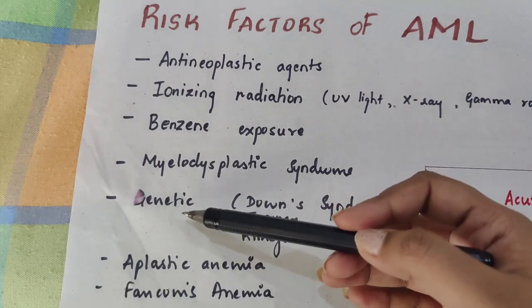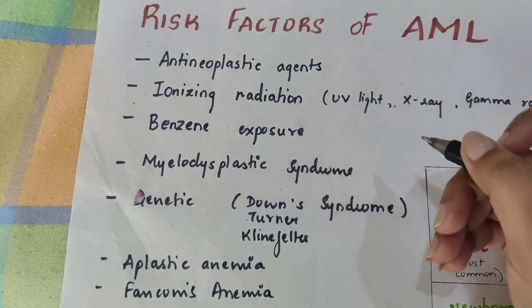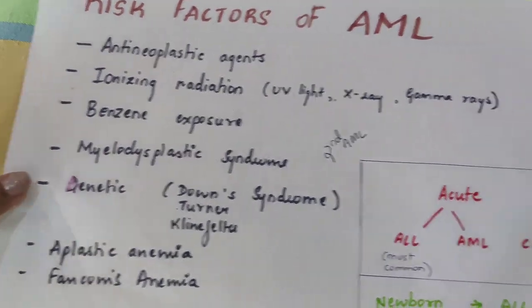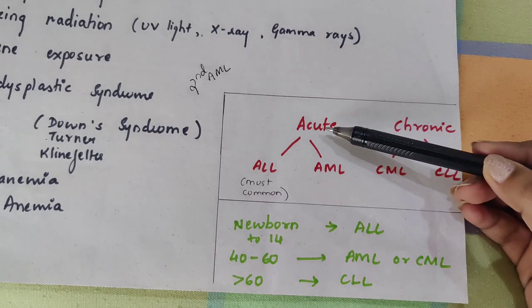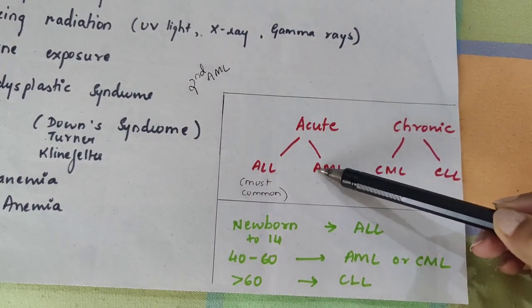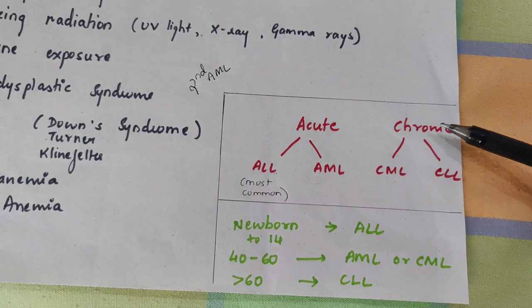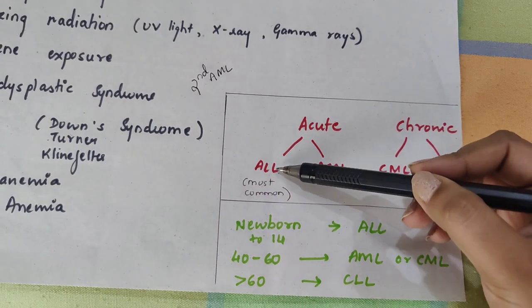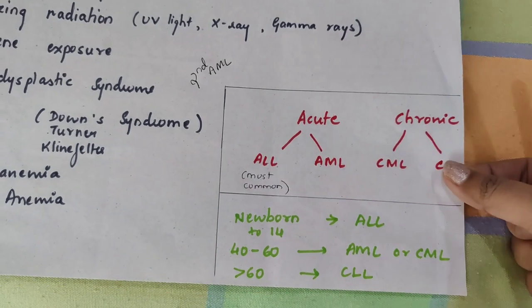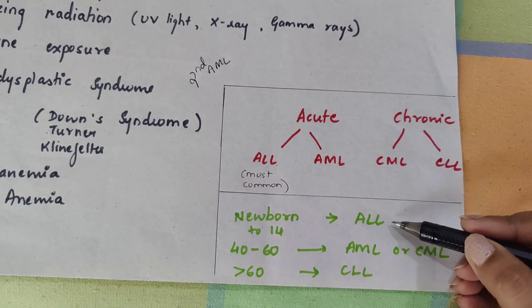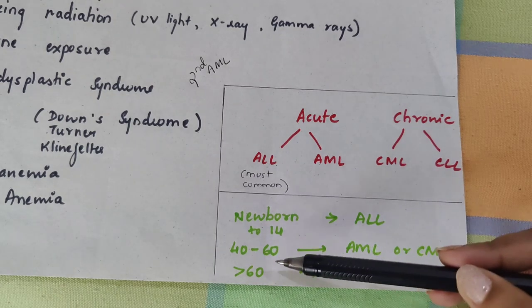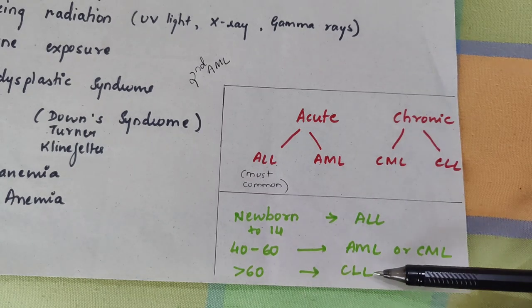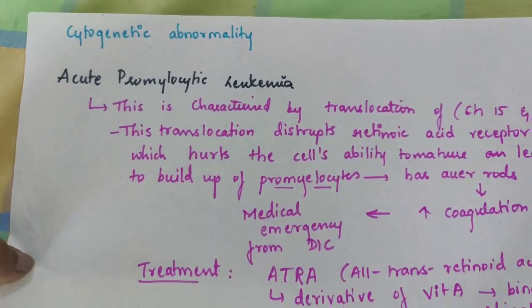When AML is caused by genetic factors or myelodysplastic syndrome, it is called secondary AML. In terms of leukemia types by age: ALL is most commonly seen from newborn to 14 years; AML or CML are more common at 40 to 60 years; and above 60, CLL is most responsible.